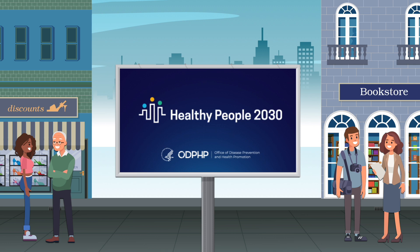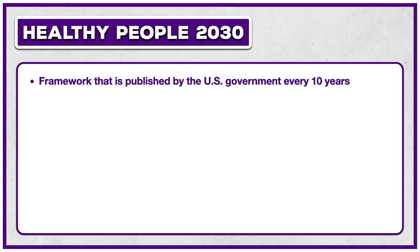Building on this discussion of challenges, I want to close out the first lesson by introducing Healthy People 2030, which is a government-led initiative to address Americans' nutrition-related challenges. Since diet and lifestyle play such a pivotal role in health, it's essential for the United States government and governments worldwide to intervene to maximize the safety and productivity of society. Healthy People is a framework published by the United States government every 10 years. You can access it online by visiting health.gov/healthypeople. The first edition was published in 1980. We get a new version each decade — in the 2010s we were working with Healthy People 2020, and now we're working with Healthy People 2030. In 2030, they'll put out Healthy People 2040.